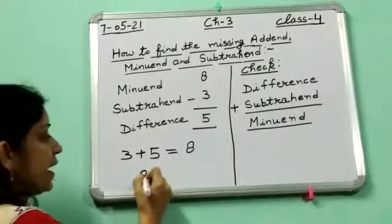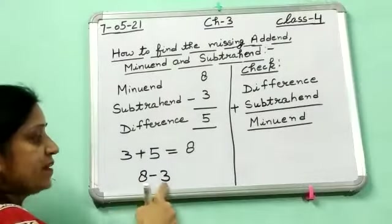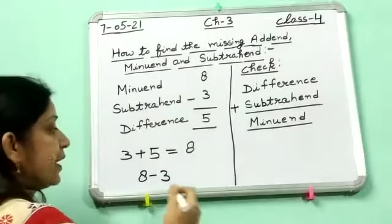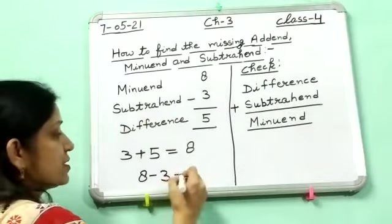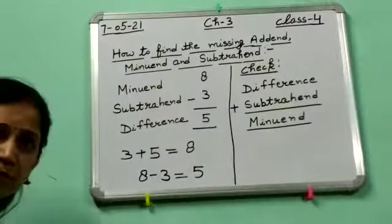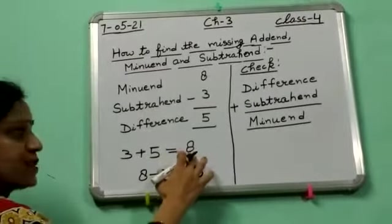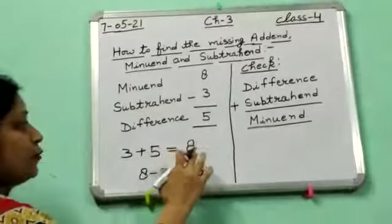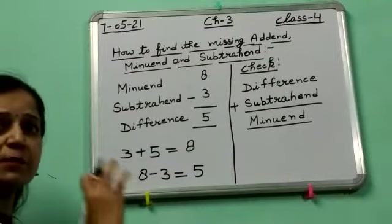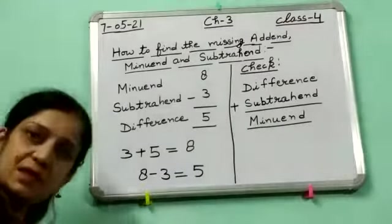Means 8 minus 3. This is the sum and this is the one addend given to you. You have to find the second addend, then you have to subtract. 5. Understood all of you? Means 2 addends are added, sum comes, and if you have to find the one addend then you have to subtract the second addend from the sum.